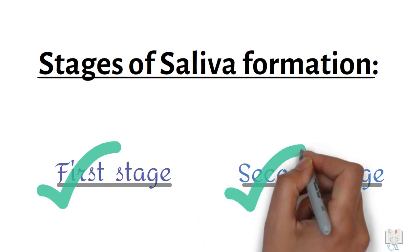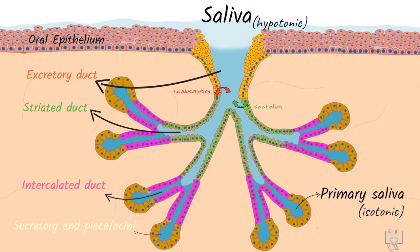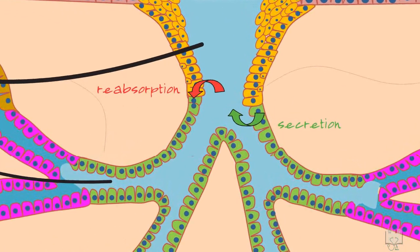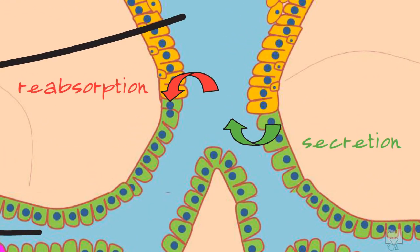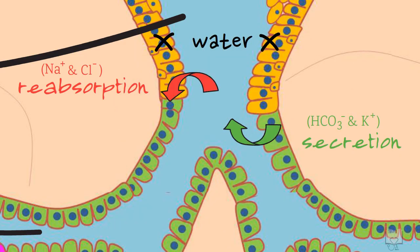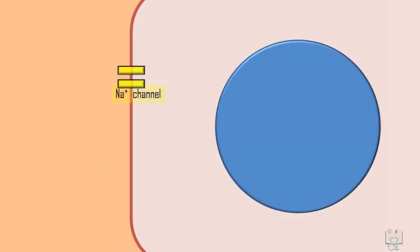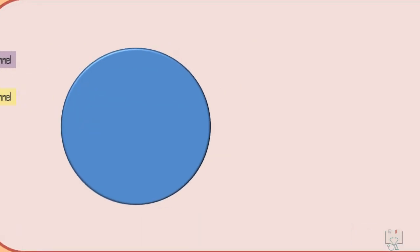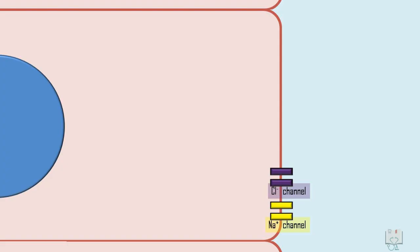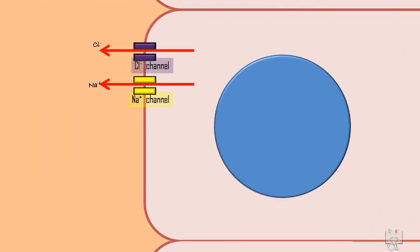In the second stage, as this isotonic saliva formed in the acini passes through the striated ducts and excretory ducts, it gets modified mainly by reabsorption of sodium ions and chloride ions, and secretion of bicarbonate ions and potassium ions. There is no movement of water in the duct system. Sodium ion channels and chloride ion channels are present in both the basal membrane and luminal membrane of the duct cells, working for absorption of both ions.